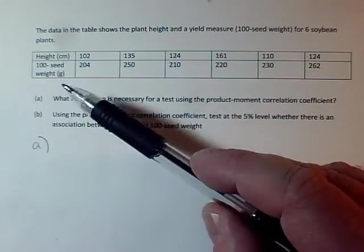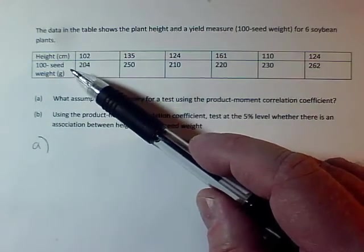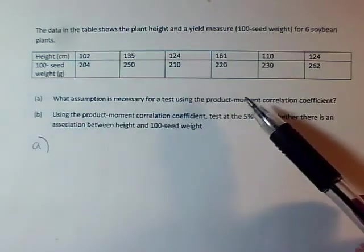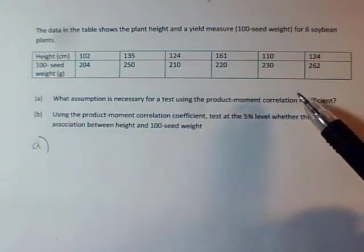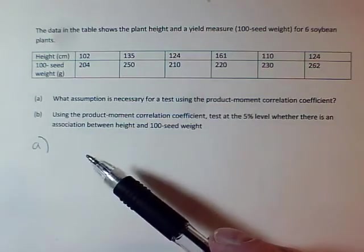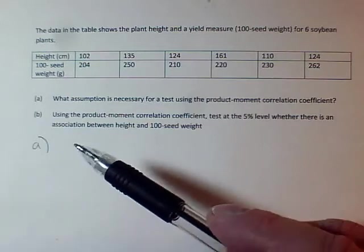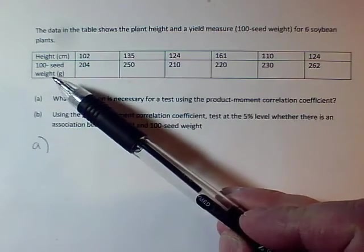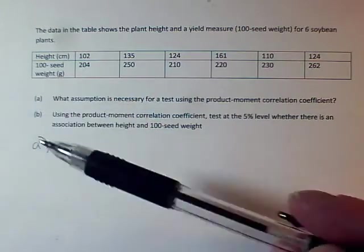In this question we have data about heights of plants and their yield measured by 100-seed weight. We're going to be doing a product-moment correlation coefficient, so the assumption that's necessary for this test to be valid, that's all we need to do in part A.